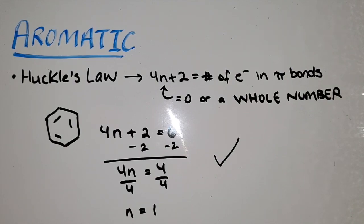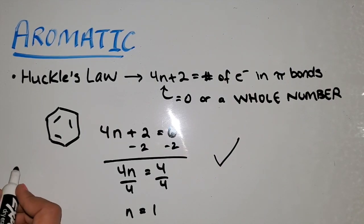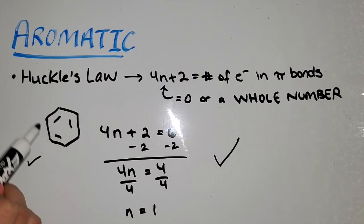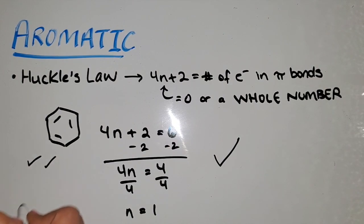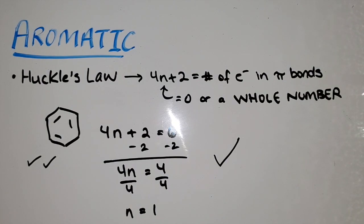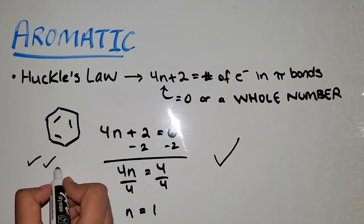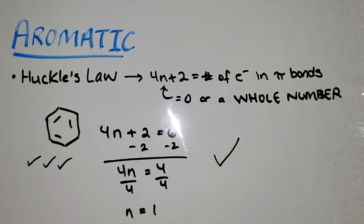Let's also quickly verify the other three conditions for benzene. The first condition is that it has to be cyclic — check. The second condition is that it has to be planar; if you look at all of the bonds, they are all trigonal planar bonds, so the second condition is met. The third condition is that it has to be conjugated — you can see how the pi bonds are alternating. Therefore, benzene meets all conditions and is actually aromatic.